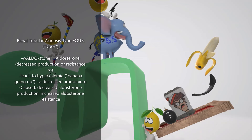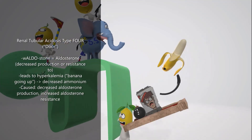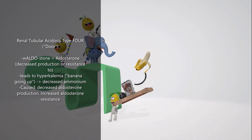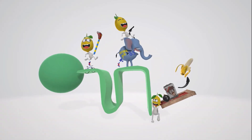Aldosterone is responsible for increasing the sodium-potassium pump. If aldosterone is resisted, sodium will not be reabsorbed but potassium will be, leading to hyperkalemia — represented by the banana going up, since banana represents potassium. There's also a relationship between potassium and ammonium: when potassium goes up, ammonium goes down. Causes of RTA type 4 include decreased aldosterone production seen in diabetic hyporeninism, ACE inhibitors, NSAIDs, heparin, cyclosporine, or adrenal insufficiency, as well as aldosterone resistance from potassium-sparing diuretics, obstructive nephropathy, or TMP-SMX.